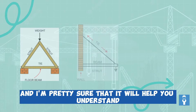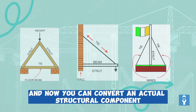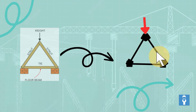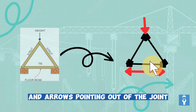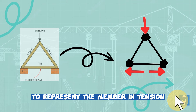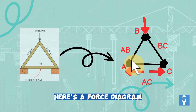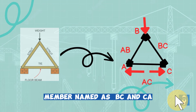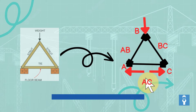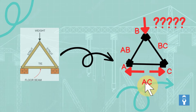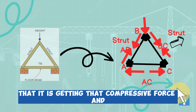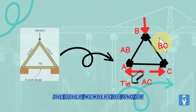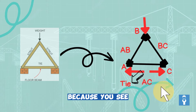I've got a couple of examples here that will help you understand Bow's notation and how you can convert an actual structural component into a force diagram. To describe members using Bow's notation, we use arrows pointing into the joints to represent compression in struts, and arrows pointing out of the joint to represent tension in ties. Here is a force diagram of a member named BCCA. Member AB is a strut because the arrow is pointing into the joint, showing compressive force. Members BC and CA are ties because they are pulling out of the joint.